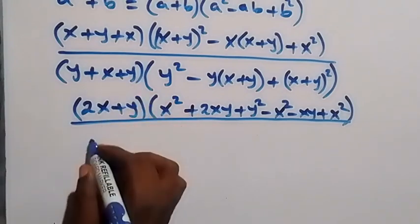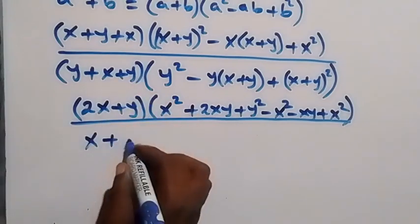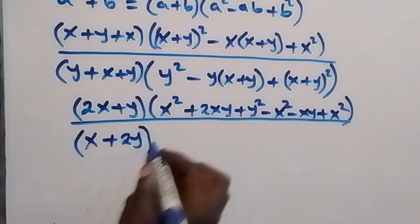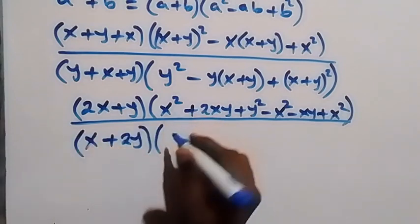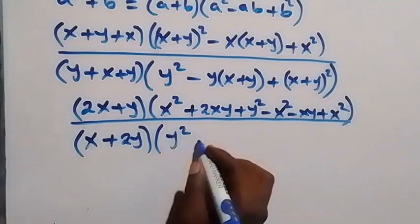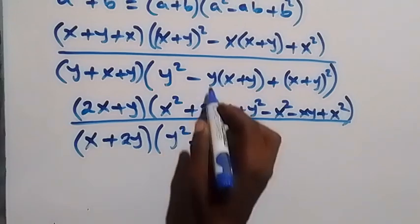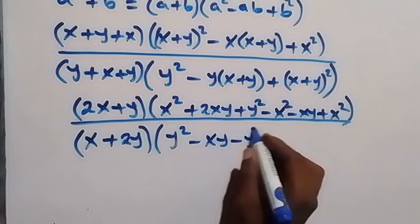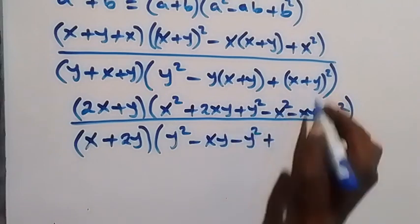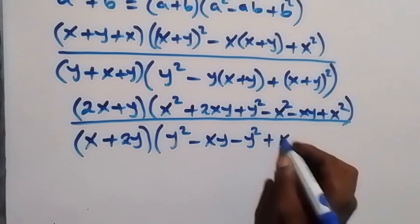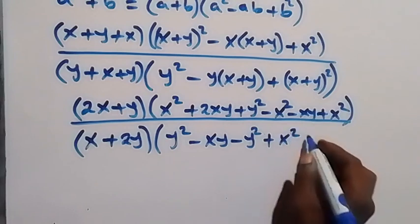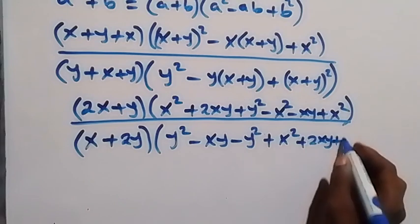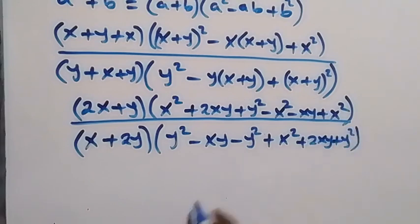For the denominator, y plus y gives 2y, so we have x plus 2y, multiplied by the bracket: y² minus xy, then minus y squared. When we expand further we get x² plus 2xy plus y².